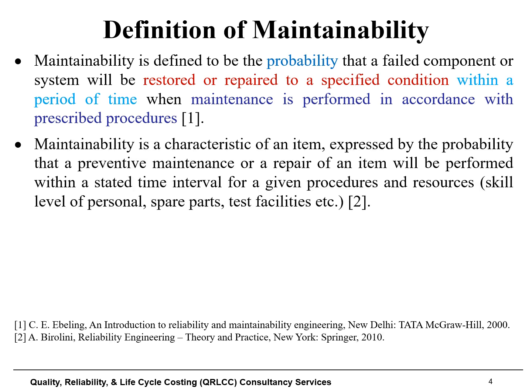The second definition of maintainability, taken from reference two, states that maintainability is a characteristic of an item. Maintainability is expressed by the probability that a preventive maintenance or a repair of an item will be performed within a stated time interval, for given procedures and resources.